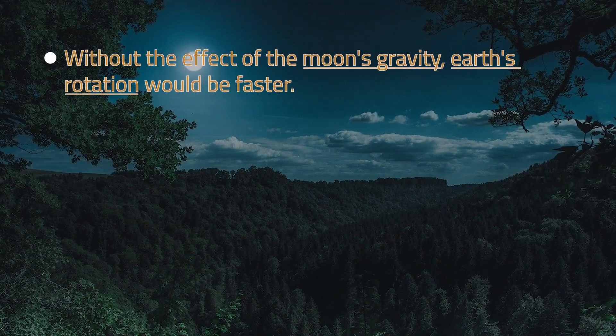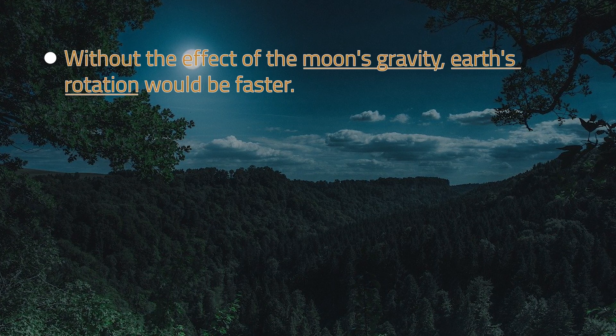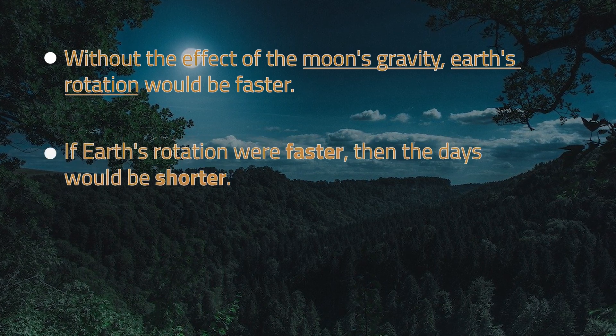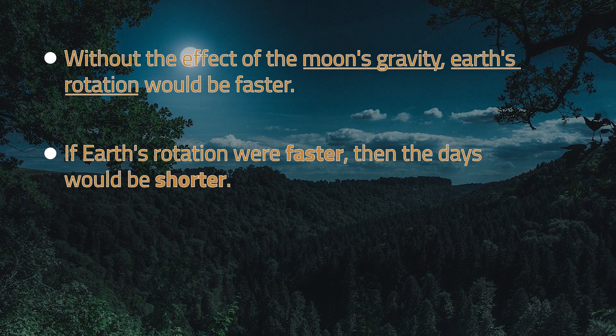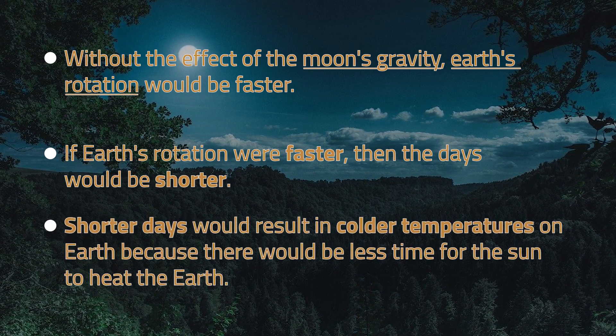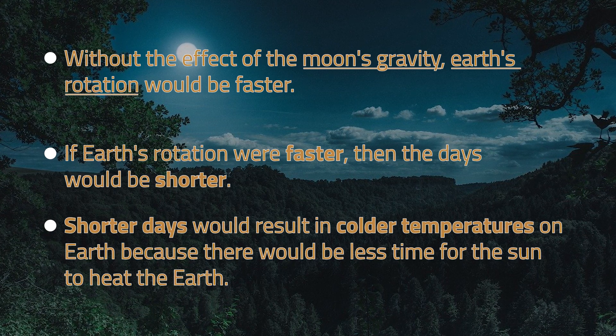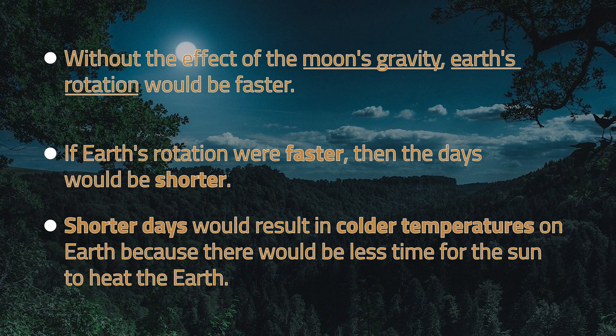Without the effect of the moon's gravity, Earth's rotation would be faster. If Earth's rotation were faster, then the days would be shorter. Shorter days would result in colder temperatures on Earth because there would be less time for the sun to heat the Earth. For most living things like us humans, we need warm weather for us to live and survive on Earth.